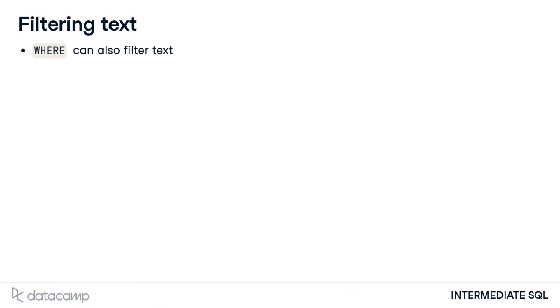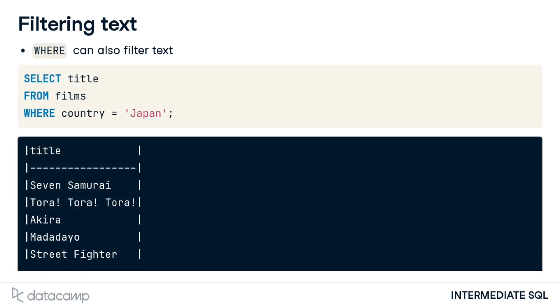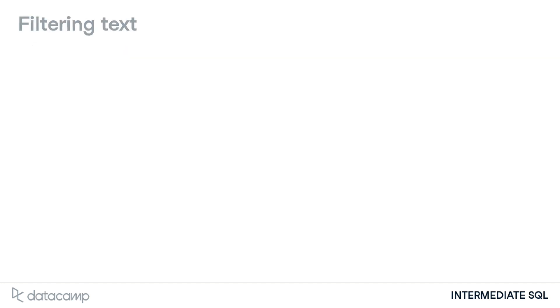However, so far, we've only been able to filter by specifying the exact text we're interested in. We'll often want to search for a pattern rather than a specific text string in the real world.